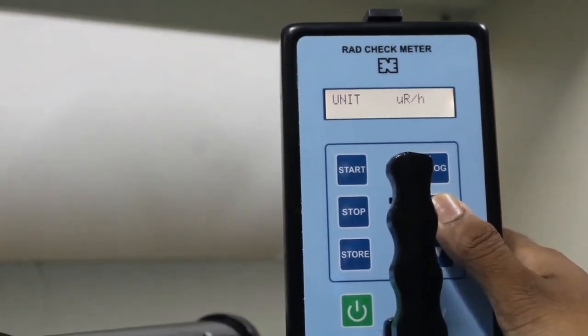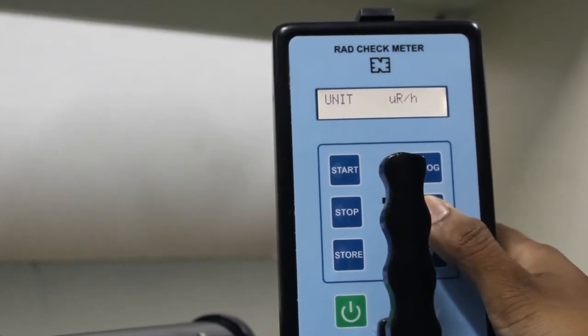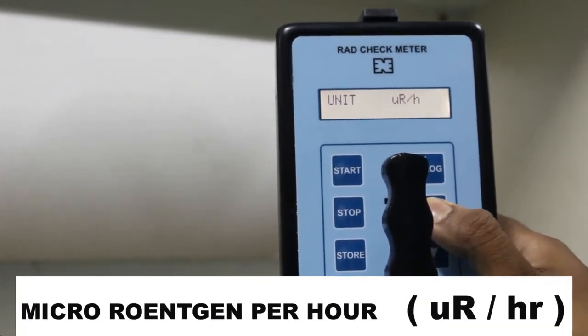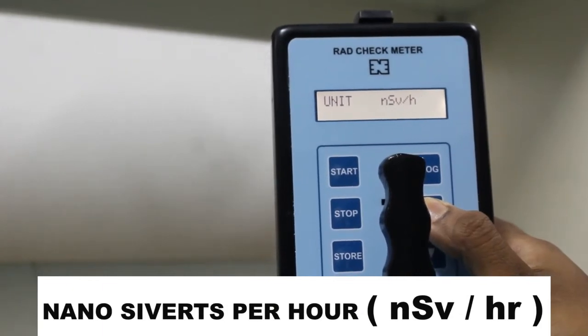Unit. We can change the measuring units depending upon our requirement. Units are microroentgen per hour and nanosieverts per hour.